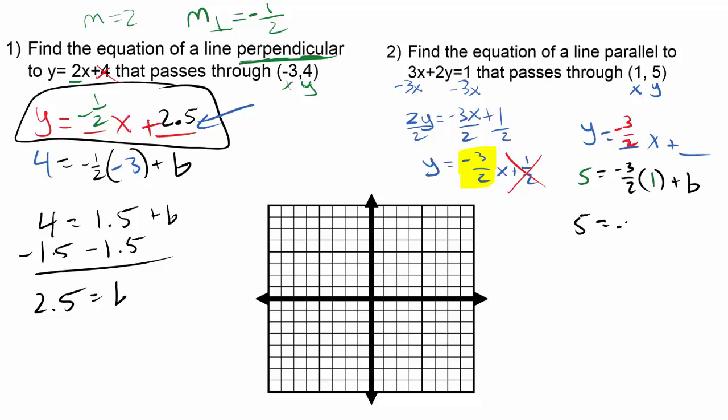So we get 5 equals negative 1.5 plus b. And if I add 1.5 to both sides, you should be getting b is equal to 6.5 or 6 and a half.